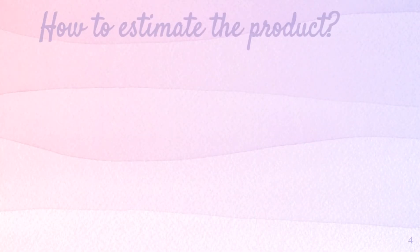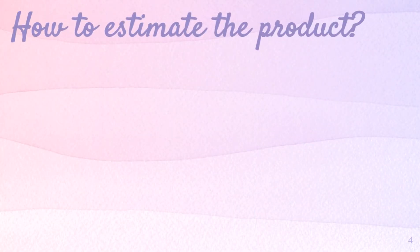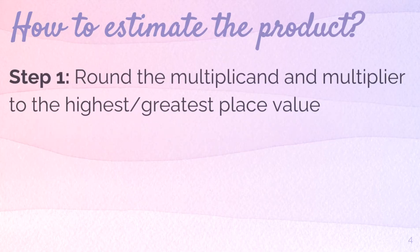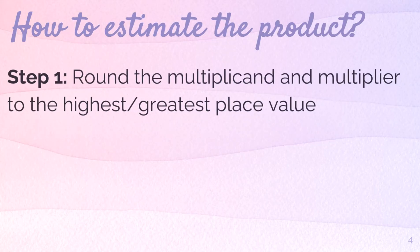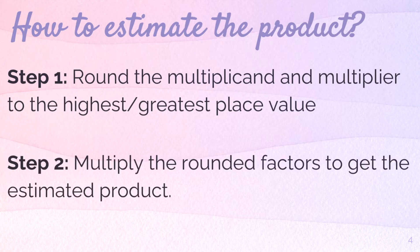Let's find out how to estimate the product. First step: round the multiplicand and the multiplier to the highest greatest place value. Second, multiply the rounded factors to get the estimated product.